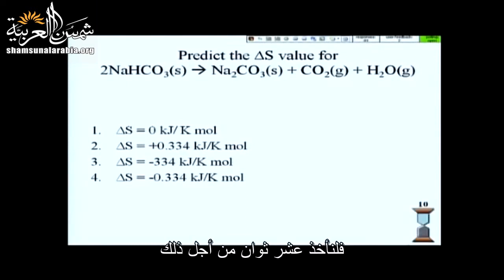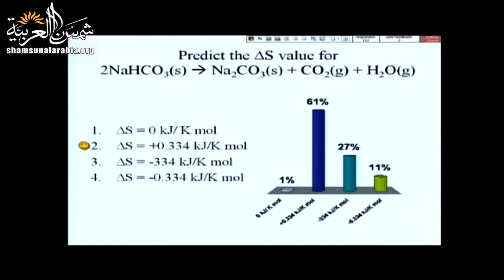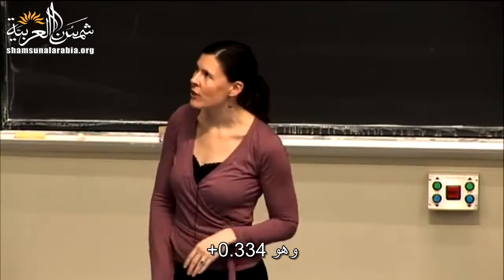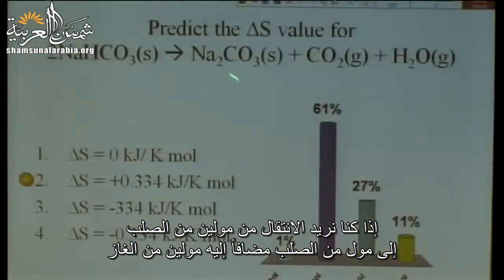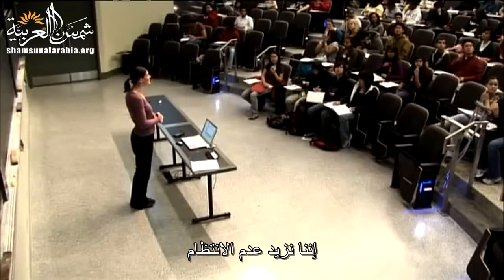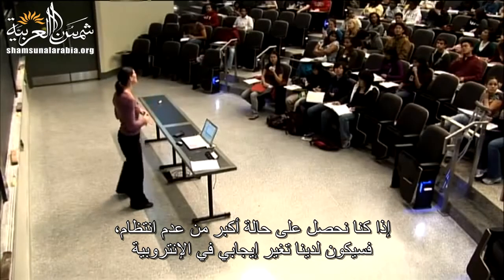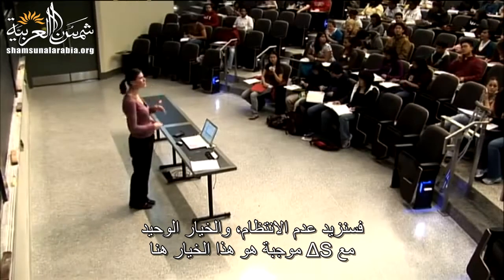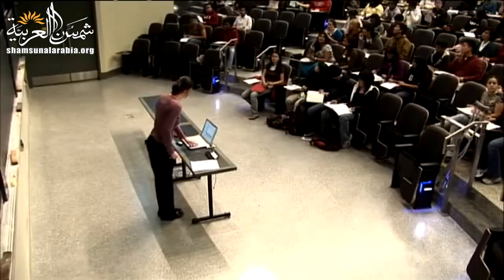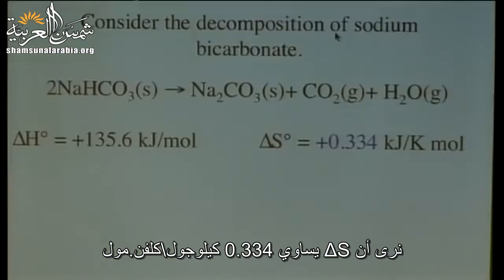The correct answer is plus 0.334 kilojoules per K per mole. If we're going from two moles of solid to one mole of solid plus two moles of gas, we are increasing the disorder, giving us a positive delta S. The only choice with a positive delta S is this one — 0.334 kilojoules per K per mole.